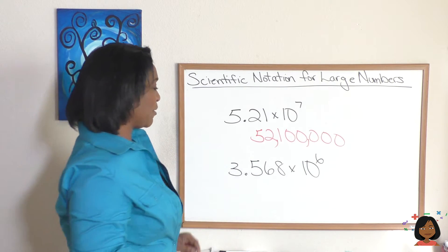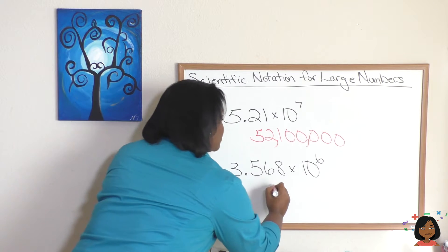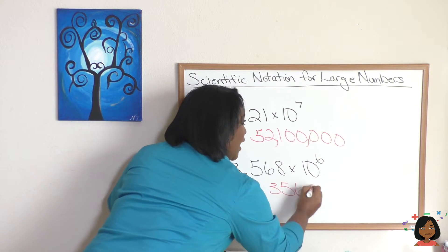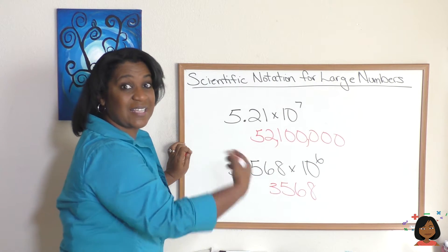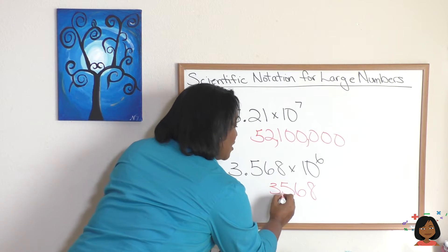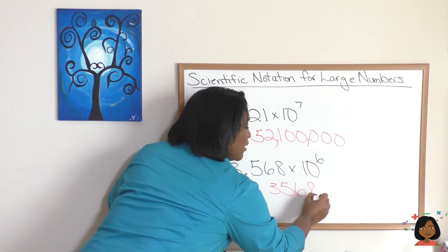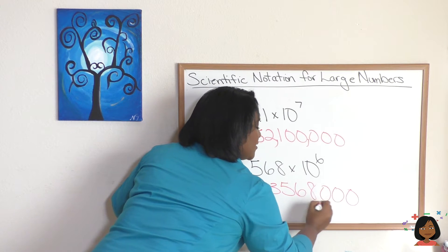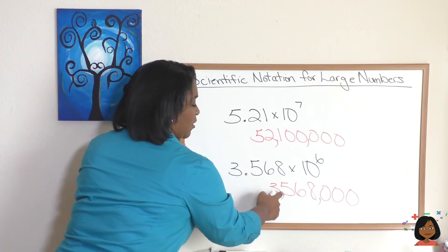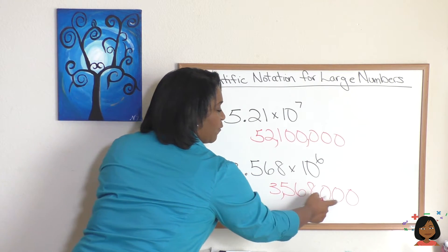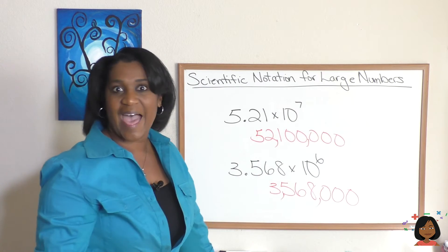Let's try it again with this number. We're going to write our number down. And we're going to move our decimal places six to the right using zeros as placeholders. 1, 2, 3, 4, 5, 6. Let's make sure. 1, 2, 3, 4, 5, 6. Boom. That is it.